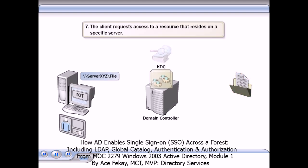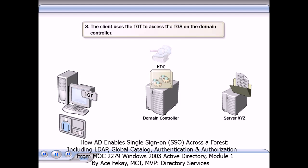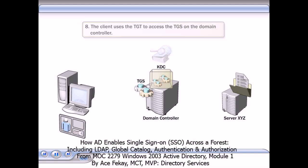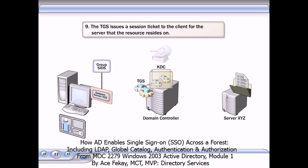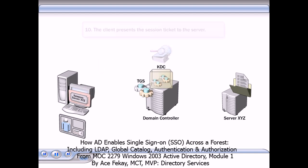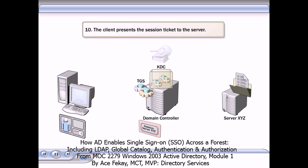The client requests access to a resource that resides on a specific server. The client uses the TGT to access the TGS, or Ticket-Granting Service, on the domain controller. The TGS issues a session ticket to the client for the server that the resource resides on. The session ticket contains the SIDs for the user's group memberships.